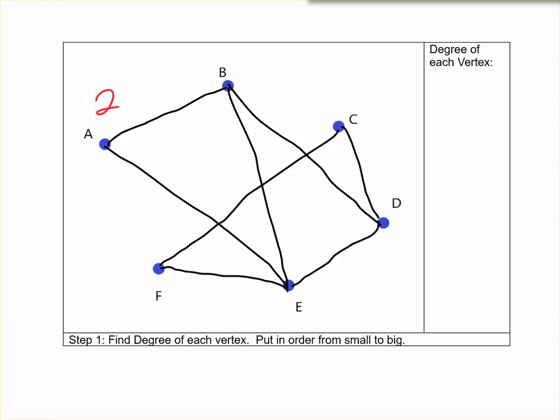So A has a degree of 2, B 3, C 2, D 3, E 4, and F 2. And then I'm going to list them in order from biggest to smallest.